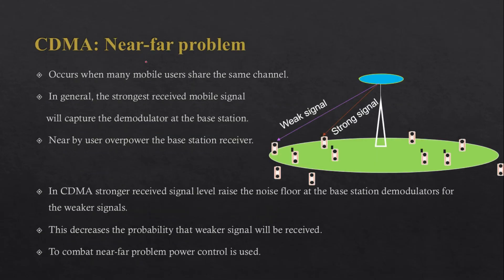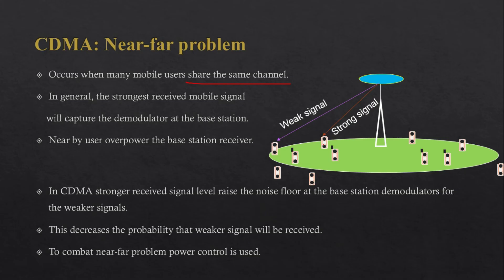Let's see what the near-far problem is in CDMA. This occurs when many mobile users share the same channel. We have one base station and several users around it. In general, the user nearer to the base station will receive a strong signal, while the user far away — for example at the cell boundary — will receive a weak signal due to multipath and path losses.